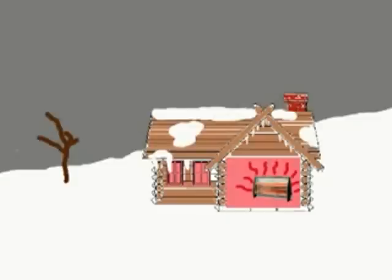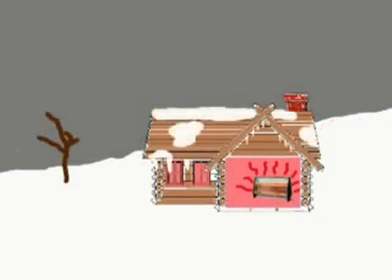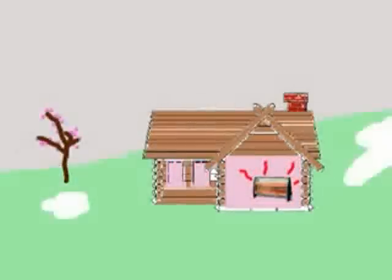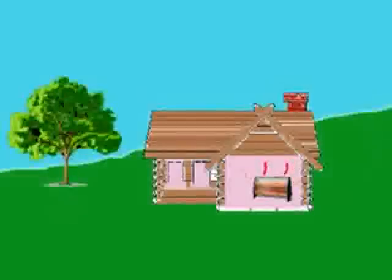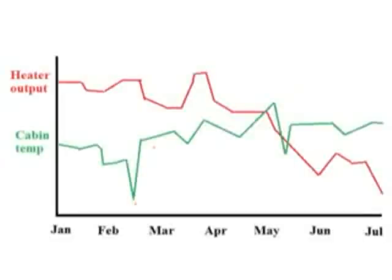The warming effect of CO2 is the output of our heater, and the cabin is the Earth. If there's a correlation, then whenever we turn up the heater the cabin should warm up, and when we turn it down the cabin will cool. Over a six-month period starting January 1st: the heat is way up high and the cabin is warm; during a cold snap I turn the heater up but still freeze; in spring I begin turning the heater down — and so it goes until July 1st. This is fairly typical output from most home heating systems between January and July.